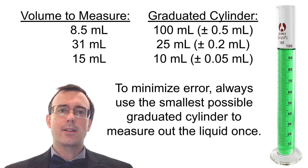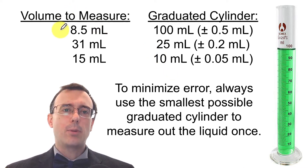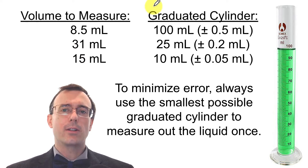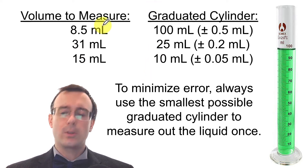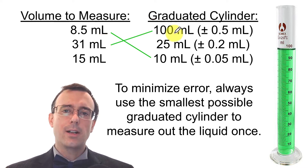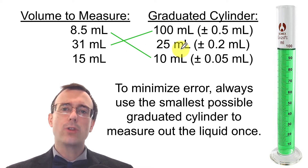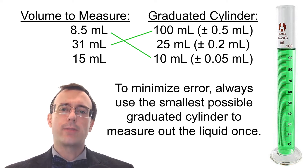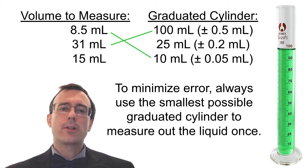Let's practice choosing the right graduated cylinder. If you need to measure 8.5 mL, use the 10 mL graduated cylinder — the smallest that fits the measurement in one pour. For 31 mL, use the 100 mL graduated cylinder; although 31 is close to 25, the 25 mL cylinder would require two measurements instead of one. For 15 mL, choose the 25 mL graduated cylinder.